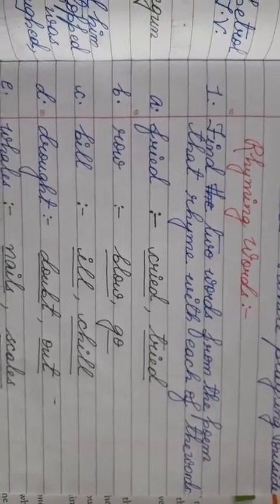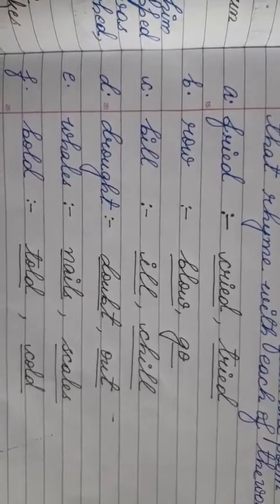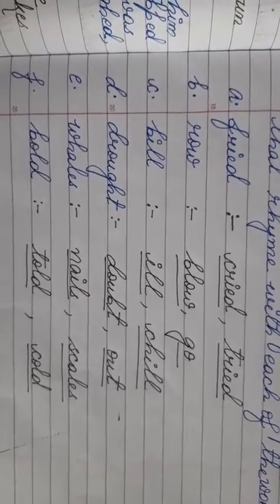Now see children, these are the rhyming words. Find two words from the poem that rhyme with each of the given words. For 'fried' we can write cried and tried. For 'row' we can write blow and go. For 'bill' we can write ill and chill. For 'drought' we can write doubt and out. For 'wales' we can write nails and scales. For 'bold' we can write told and cold.